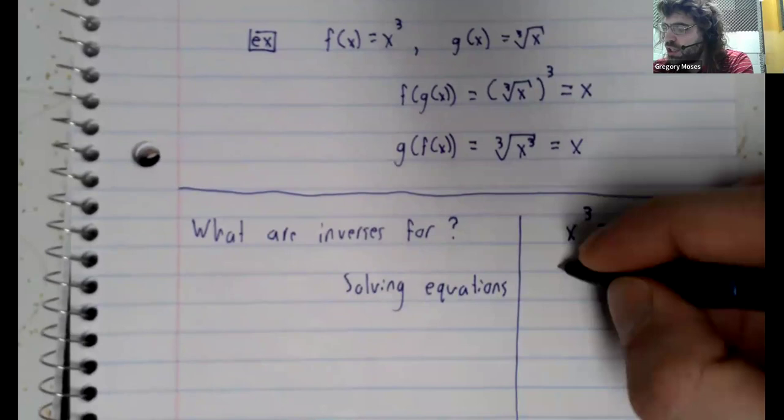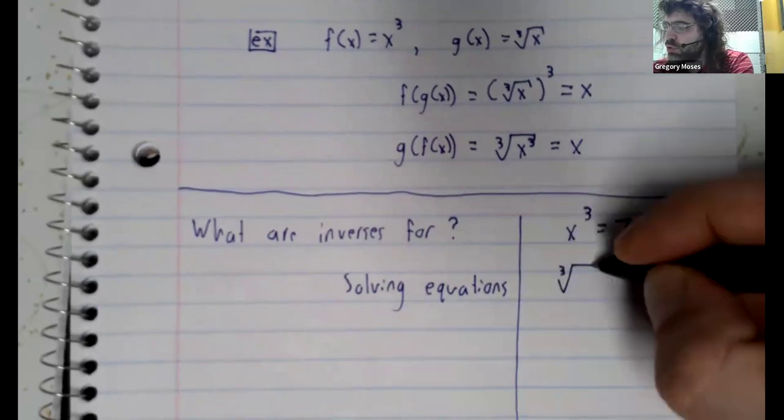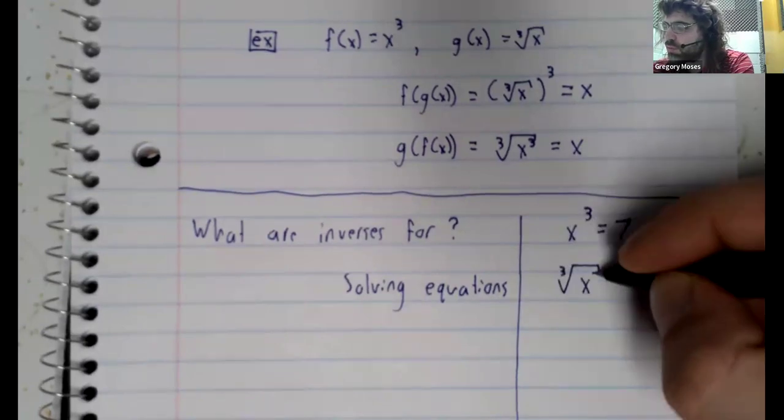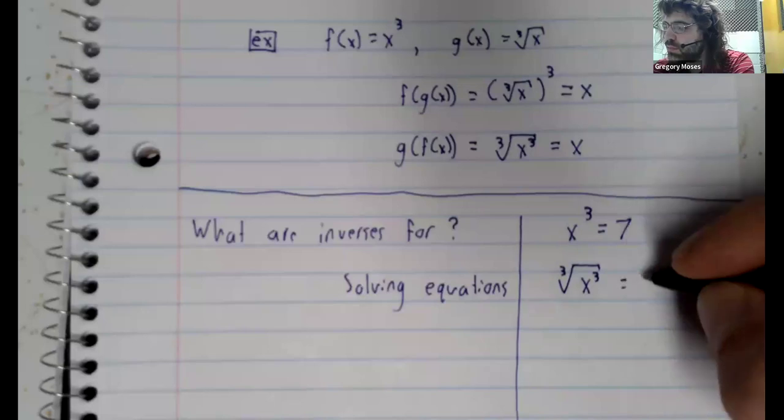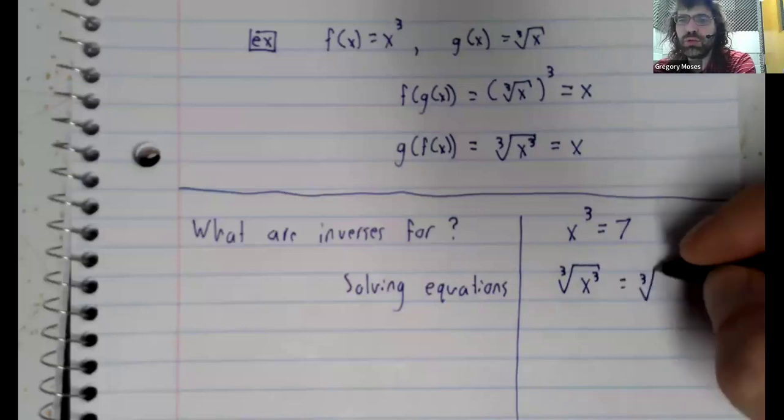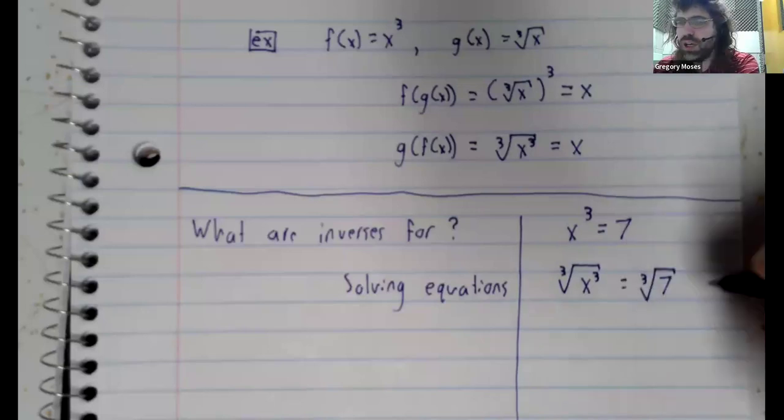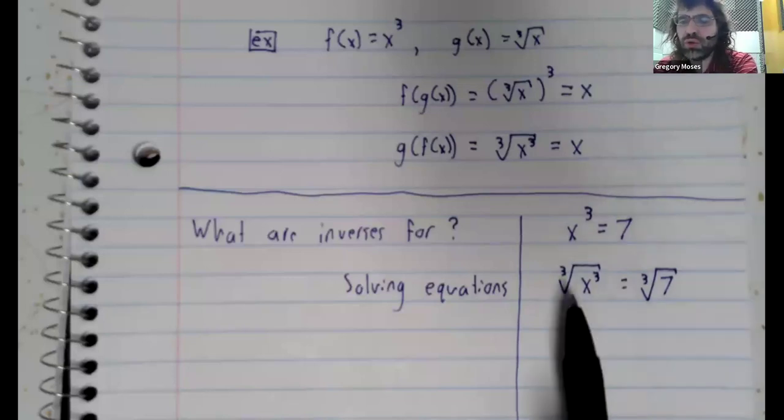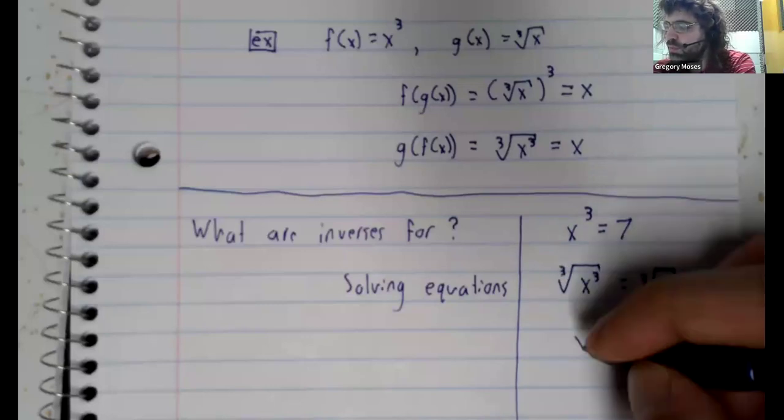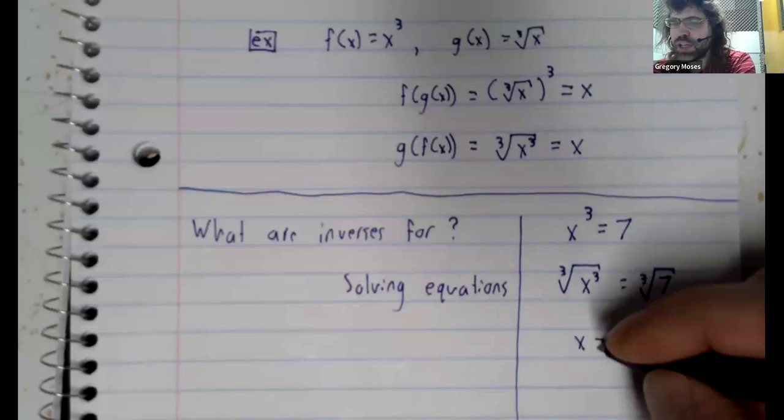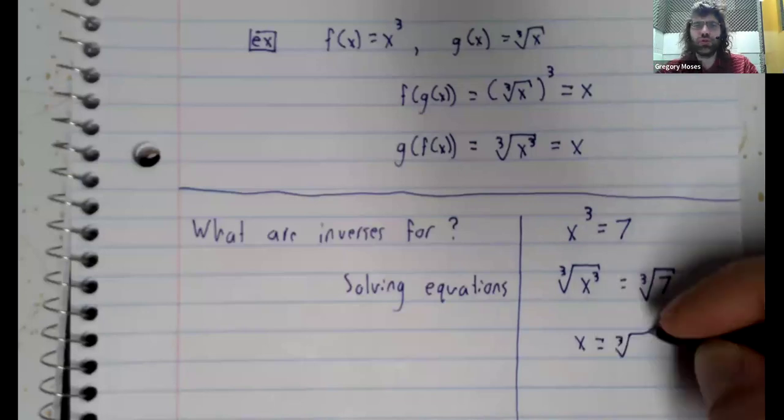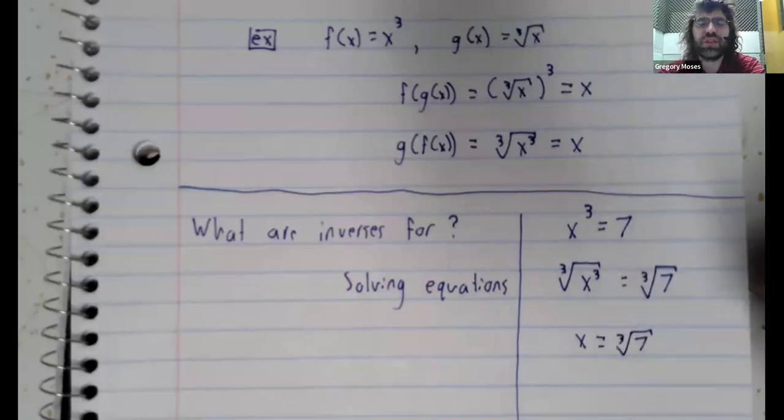Well, you can take the cubed root of both sides. On the left, because the cubed root and the cube are inverses, they cancel. And you get that x is the cubed root of seven.